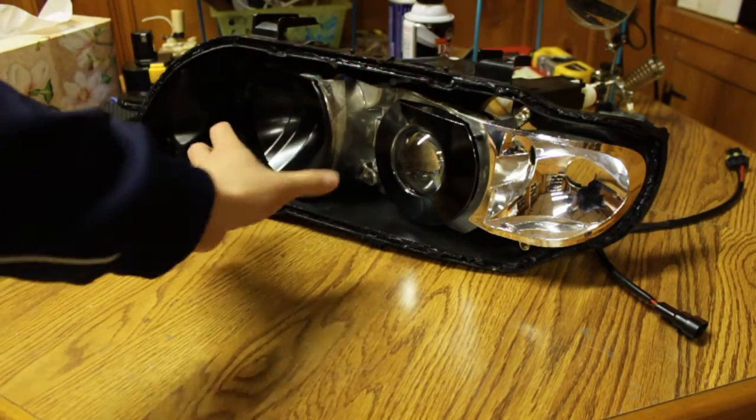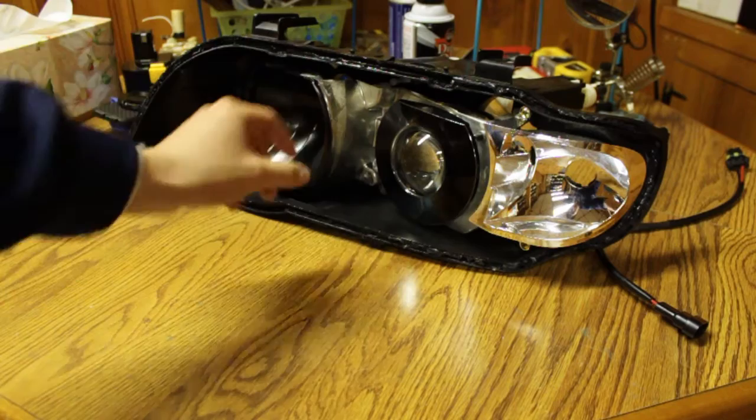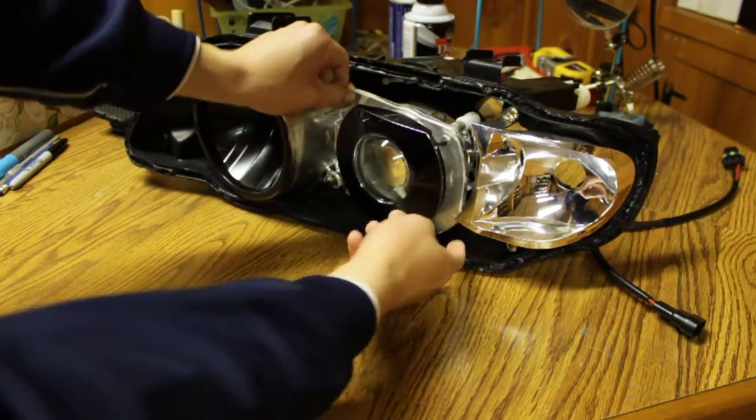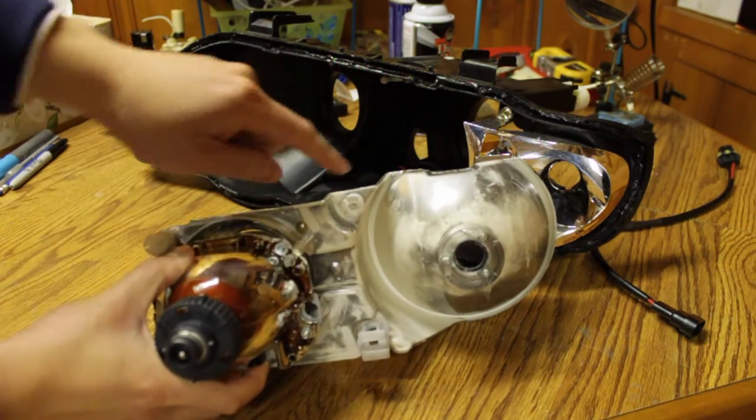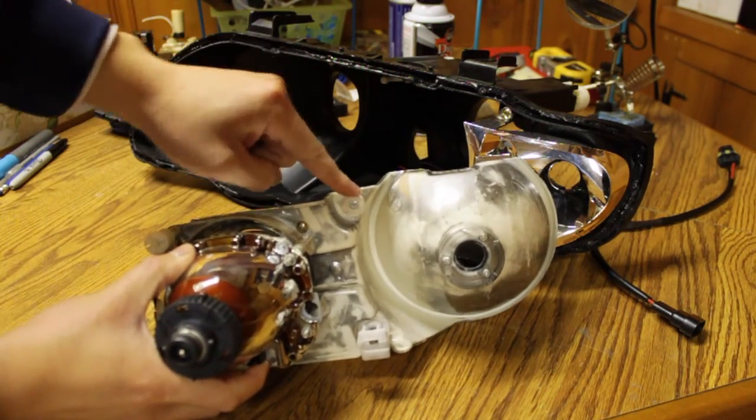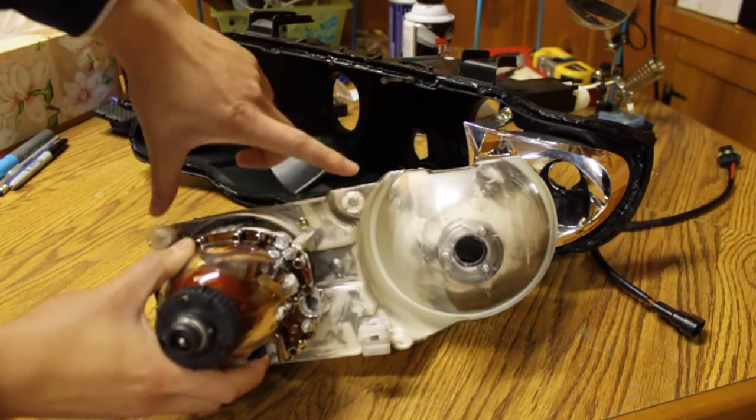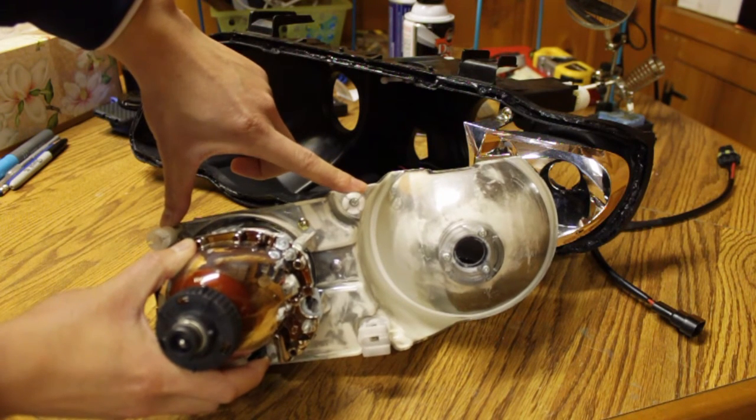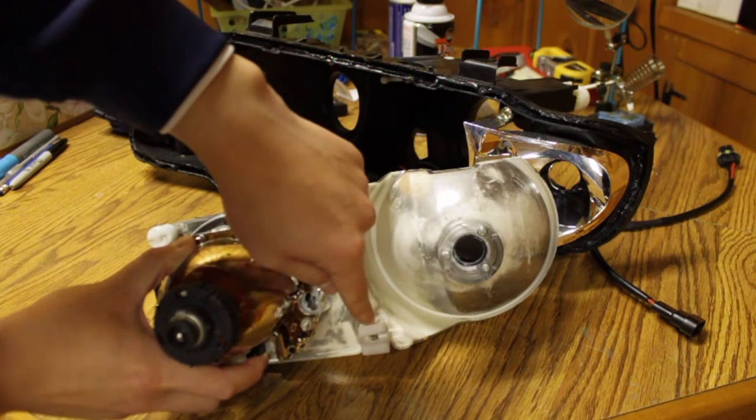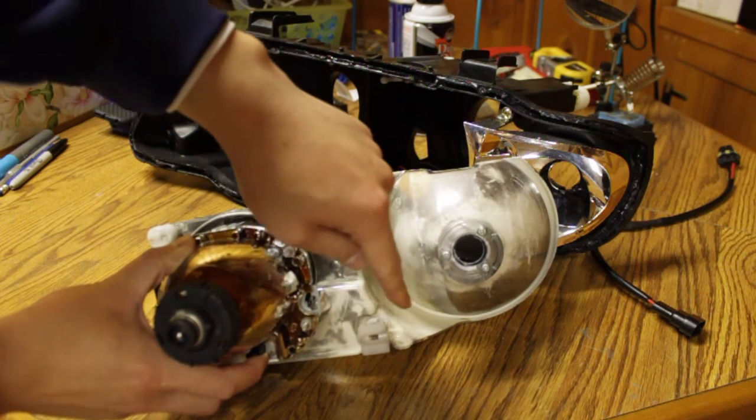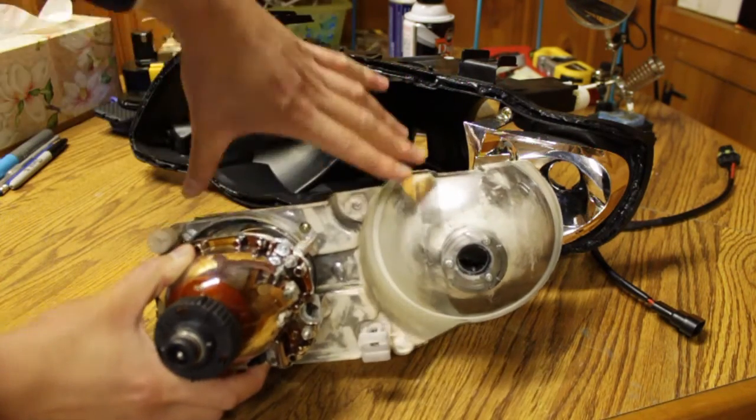Taking off the lighting portion out of the housing is very simple too. They are held together with a ball and socket here, a ball and socket right here, and a ball and socket at the bottom. These two are for your left and right and up and down aiming adjustments, and this one is for your auto-leveling motor, or in my case if you're coming from a halogen bulb, it's just going to be another holder for the lighting bowls.